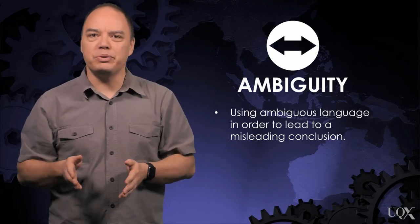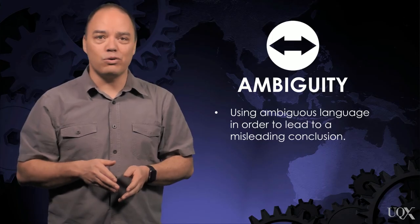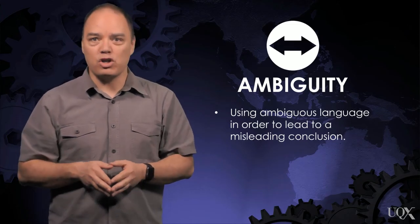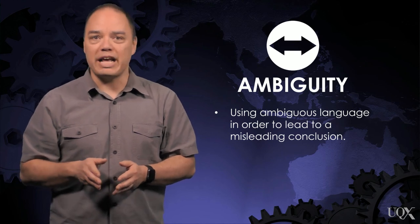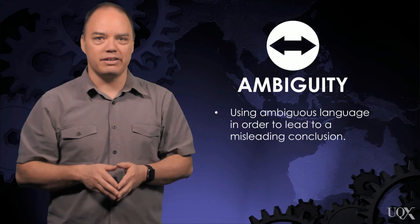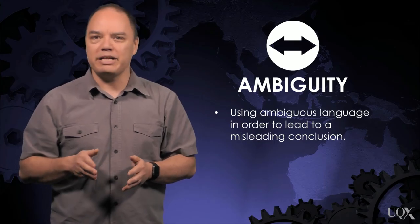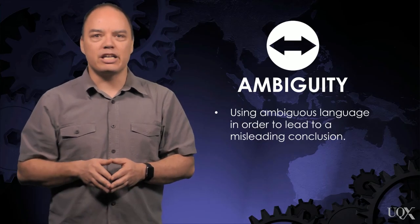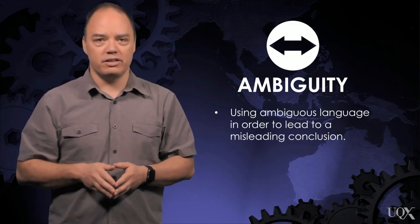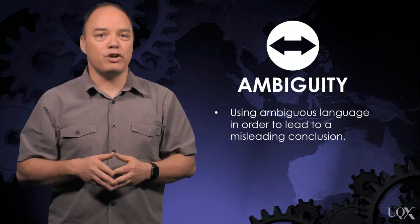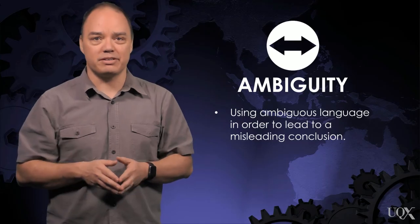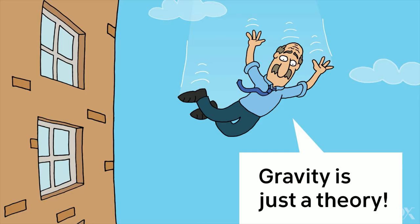The fallacy of ambiguity involves using ambiguous language in order to lead to a misleading conclusion. The most common form is the fallacy of equivocation — using words that have multiple meanings as if they mean the same thing. A common example in science denial is exploiting confusion about the word 'theory.' To a scientist, a theory is an explanation of the world confirmed by many experiments and empirical evidence. To non-scientists, a theory is just a hunch or someone's idea. This difference in meaning can be used to cast doubt on established science.